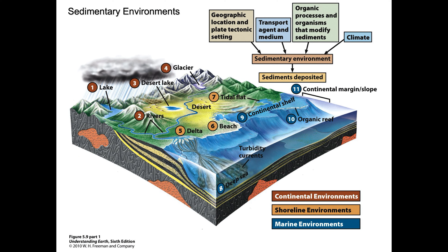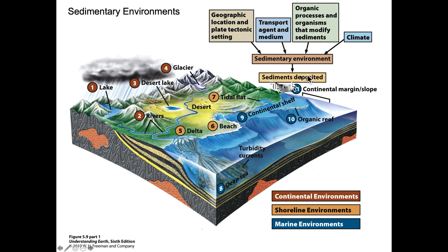In terms of climate, we're going to go from relatively warm, wet climates at the equator to cool or frigidly cold, dry climates near the poles. These are going to generate different sedimentary environments, and as a result, the sediment generated by these mechanisms will be different.